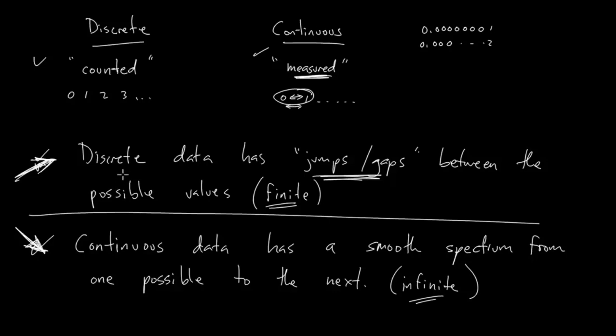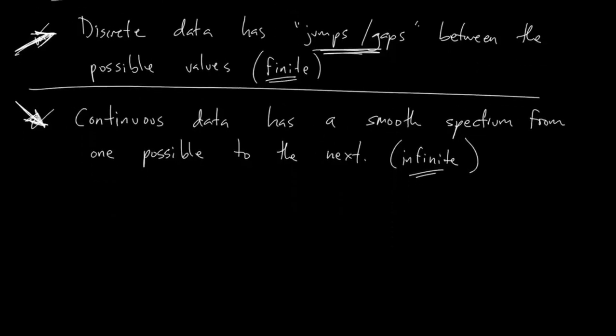Now, one thing that I want to be careful about, though, is I don't want to give you the impression that you can't have decimals with discrete data. Let me give you an example where discrete can have decimals, but it'll still make sense that it should be discrete data. Let's say, for example, that there's a store that sells only two items. They sell pop, and pop costs $2, and they sell gum, and gum costs $1.50.